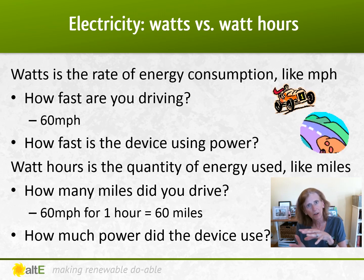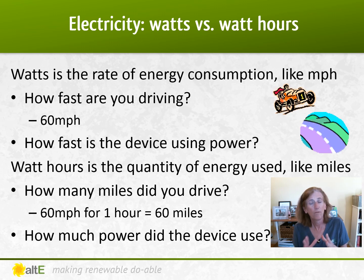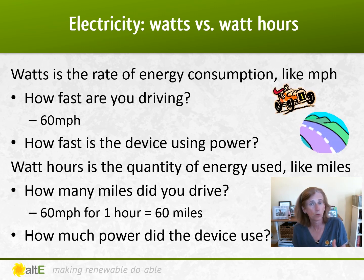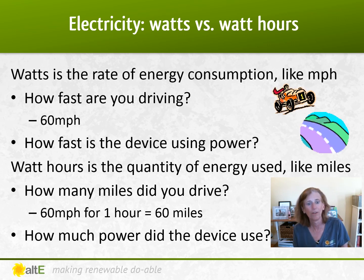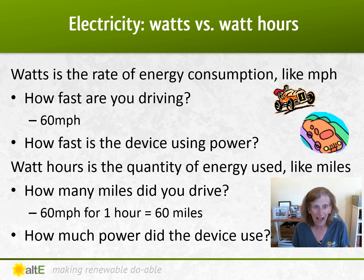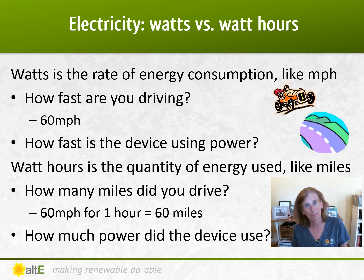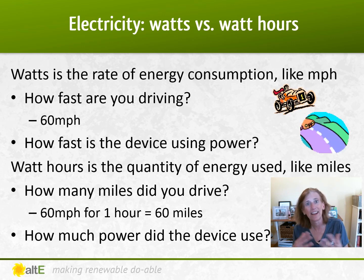It's very important to differentiate watts versus watt hours. We can use a car analogy: how fast is the car driving? If you're going 60 miles per hour and you maintain that speed for one hour, you'll have driven 60 miles. So miles per hour is like watts, and miles is like watt hours — how fast versus how much.